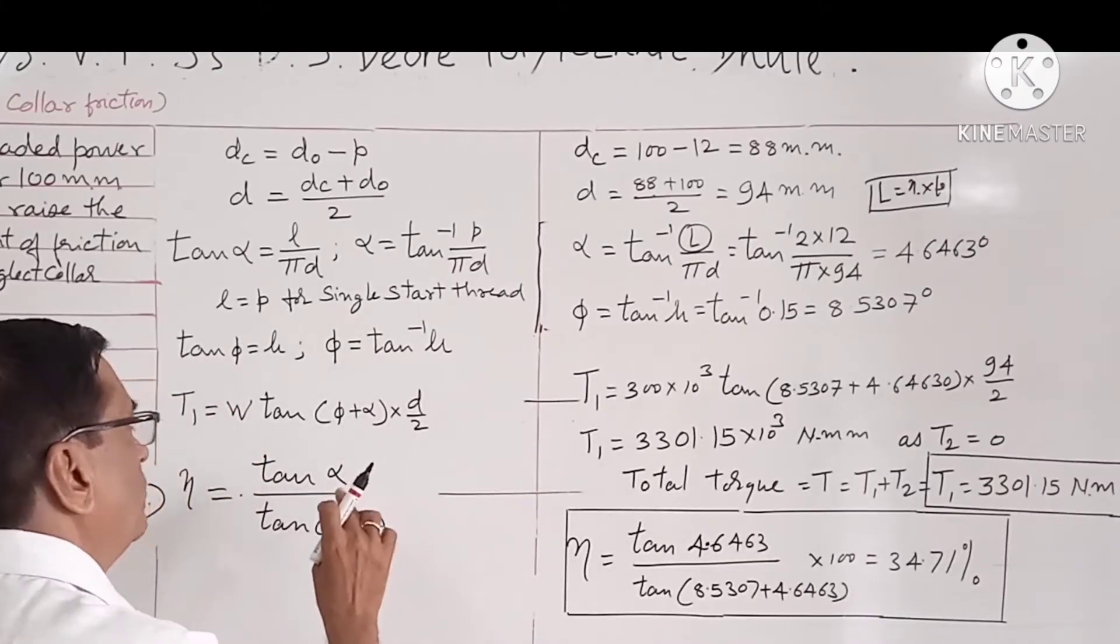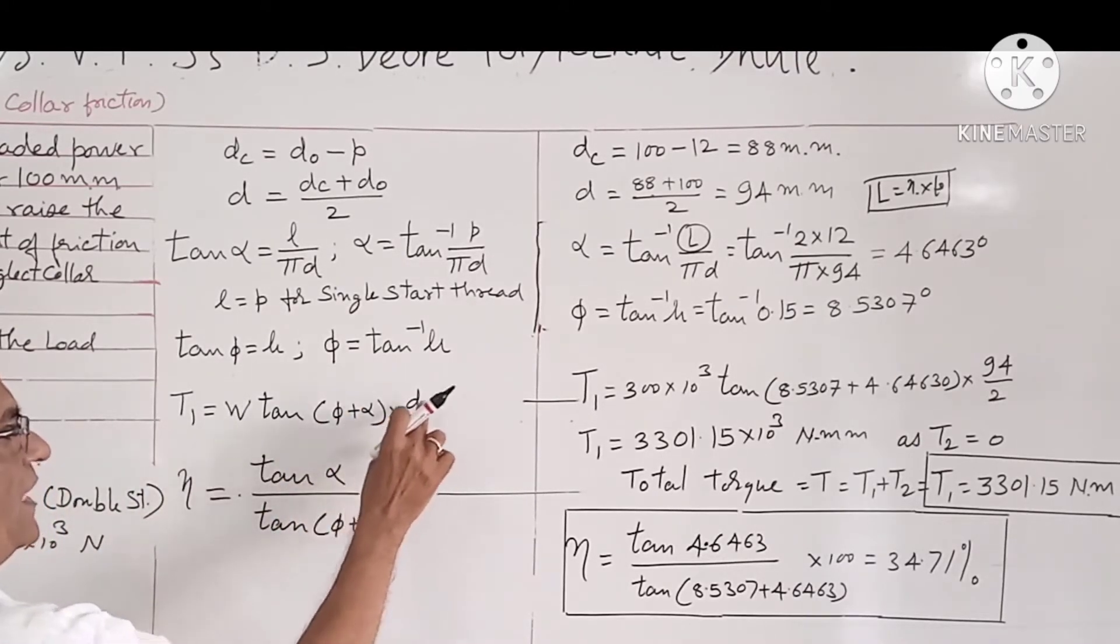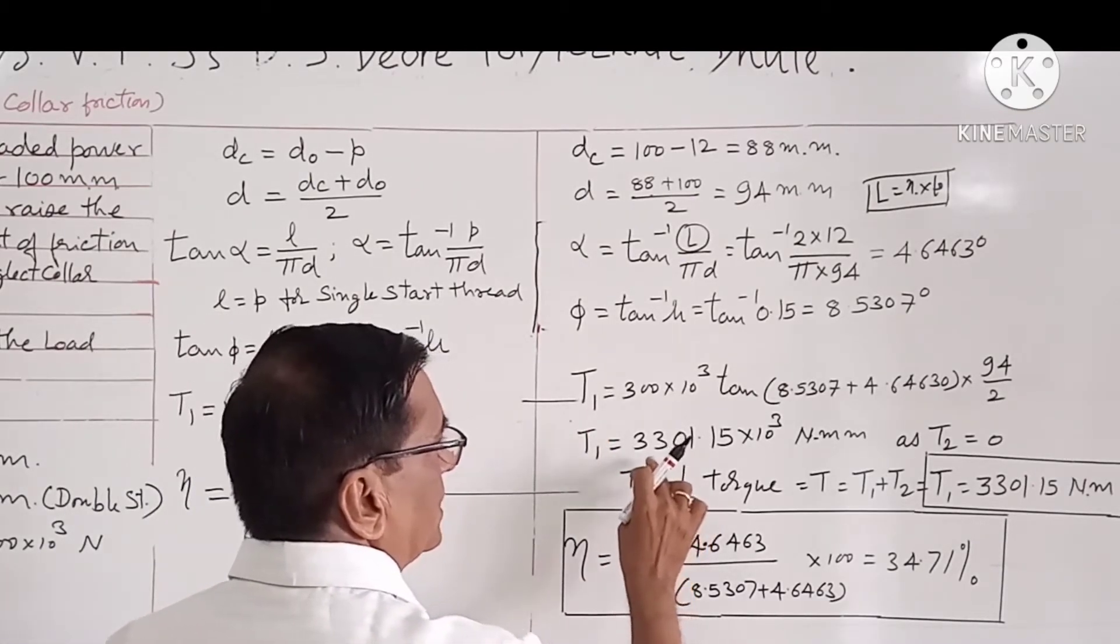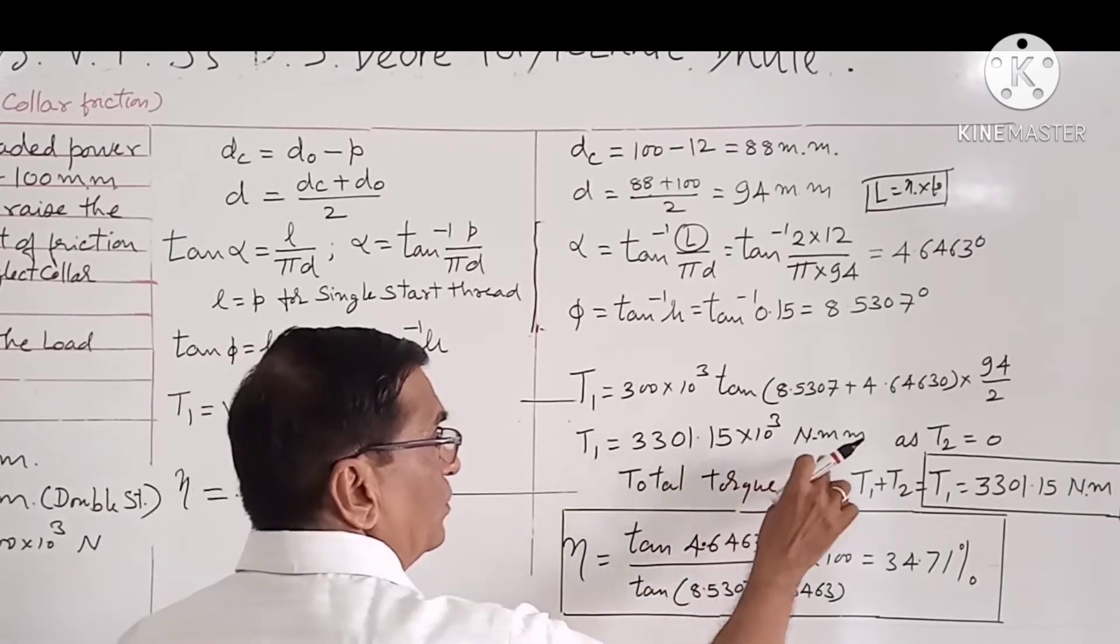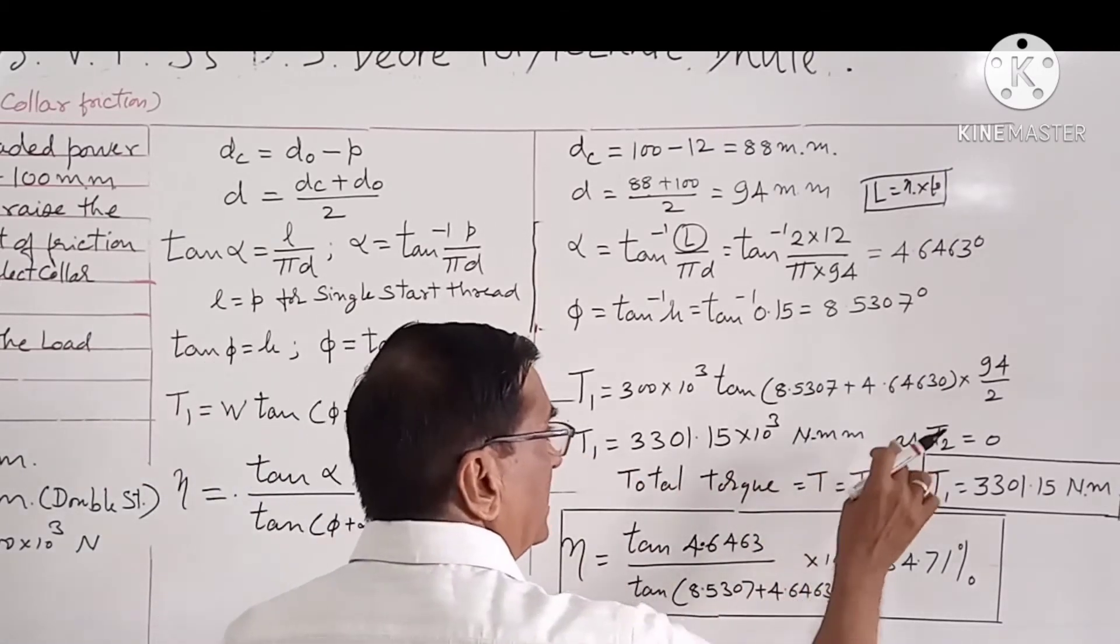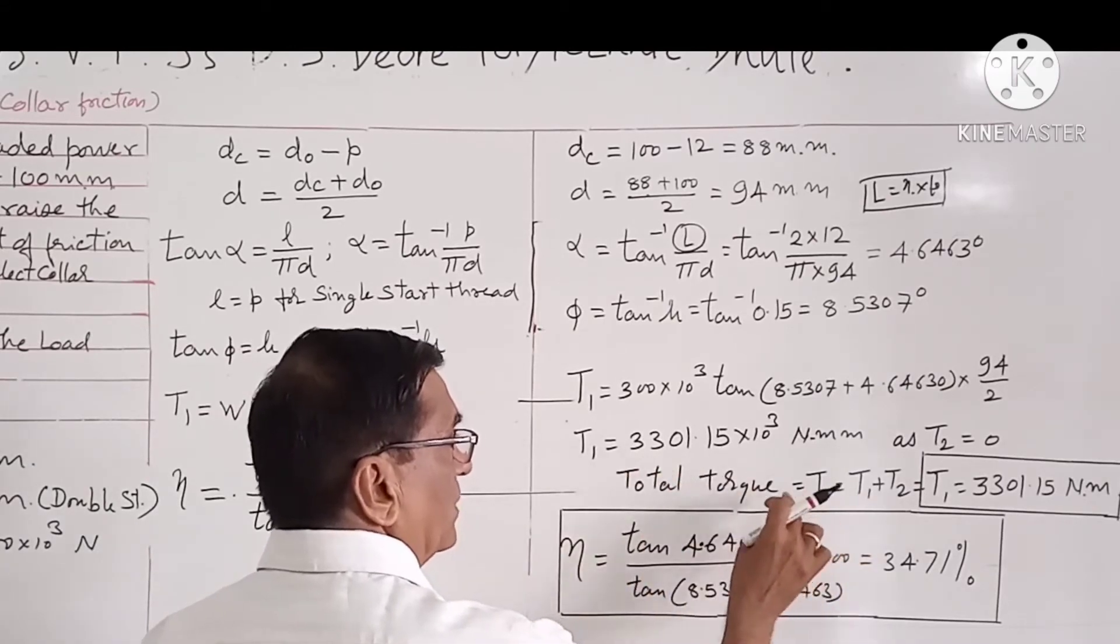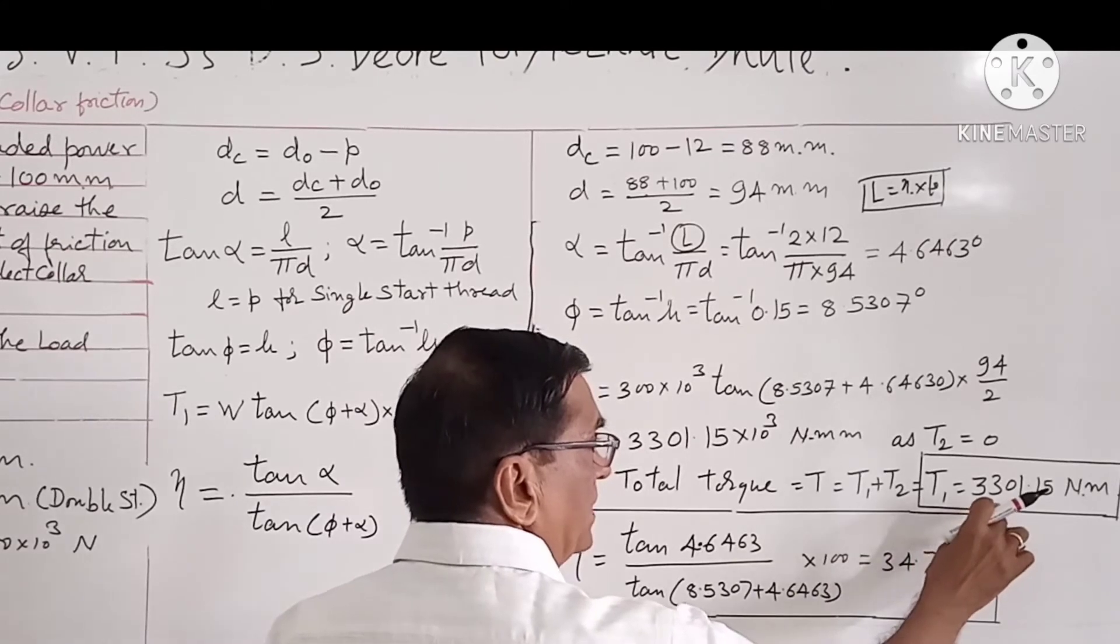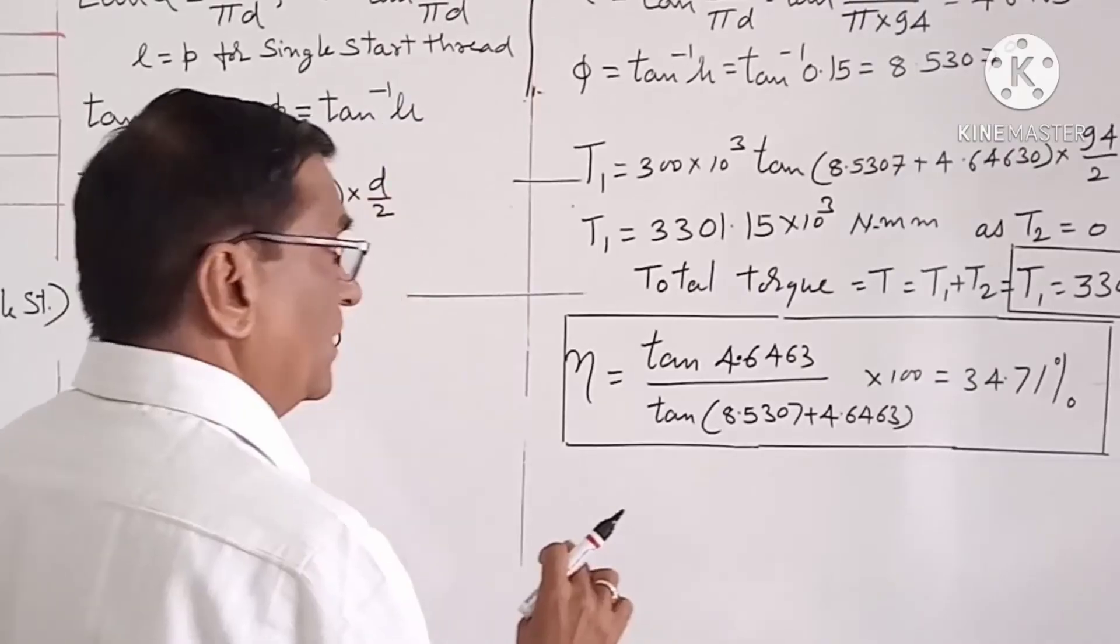Now we will calculate the value of torque from this formula by putting the values of W, φ, α, and d. This comes out to be 3301.15 × 10³ N·mm. This is equal to the total torque because we are neglecting the collar friction. So total torque T = T₁ = 3301.15 N·m.